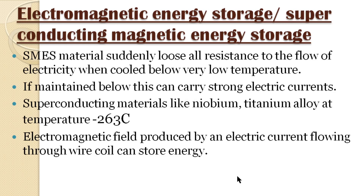The fifth storage type is electromagnetic energy storage, specifically superconducting magnetic energy storage. This uses a material that loses resistance when cooled to low temperatures. Materials like Niobium-Titanium alloys are maintained at minus 263 degrees Celsius to carry strong electric currents. An electromagnetic field is produced by the current flowing through a wire coil, allowing energy to be stored. These are the 5 types of solar energy storage.